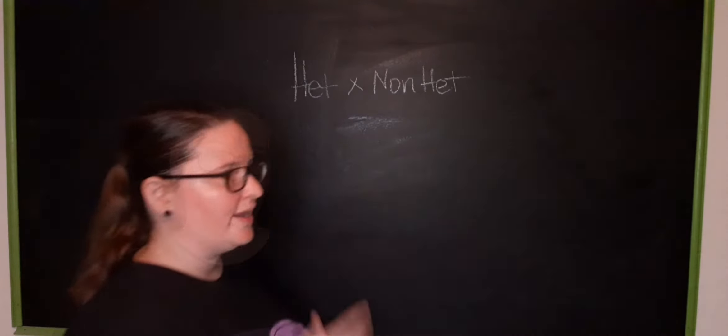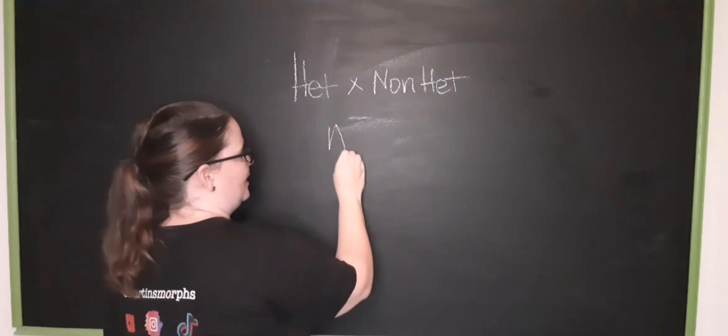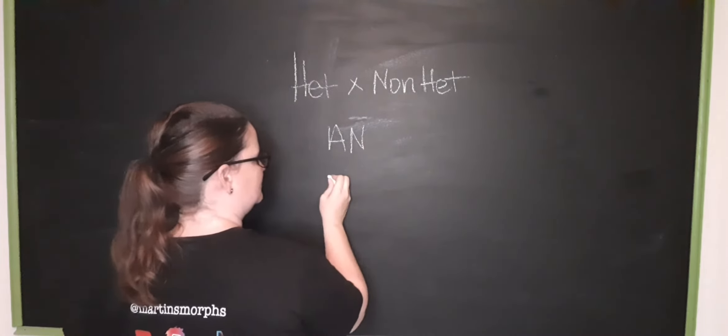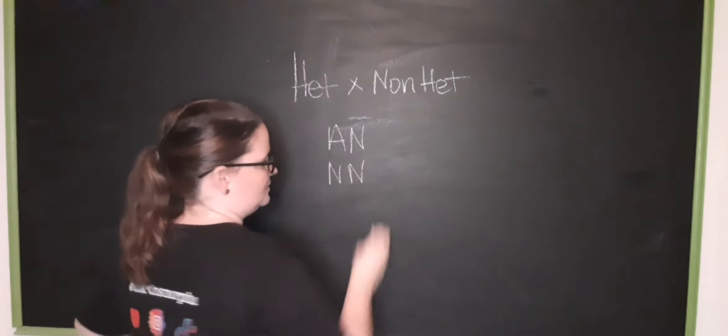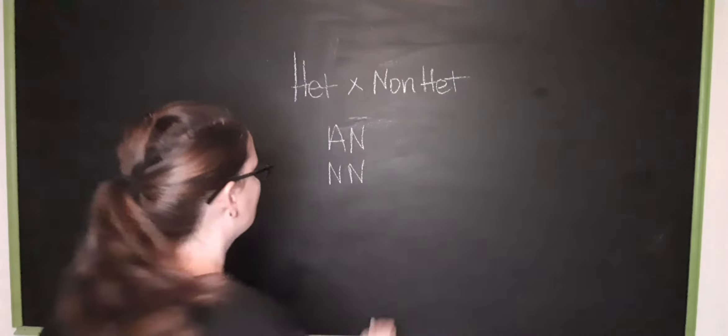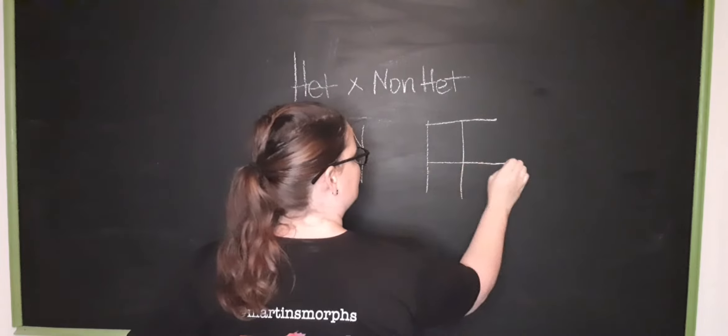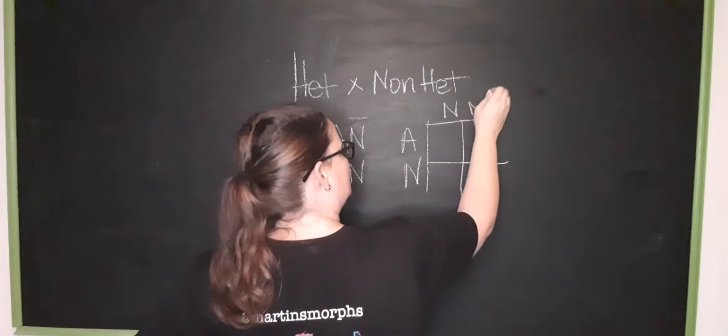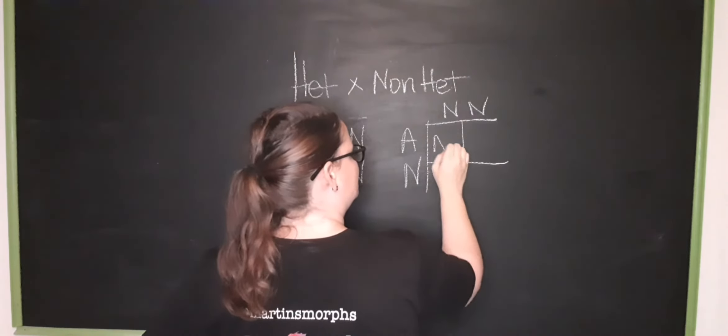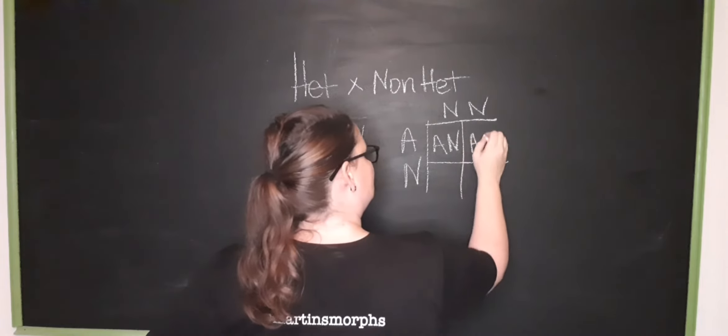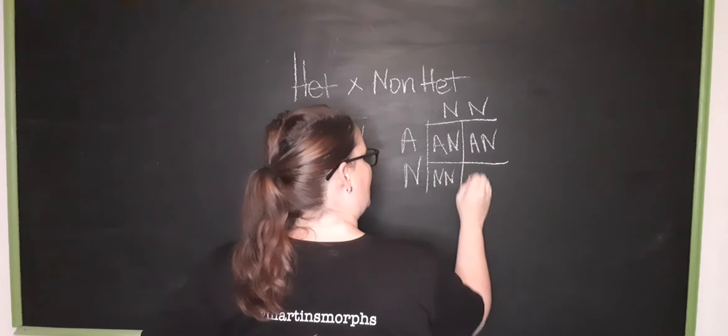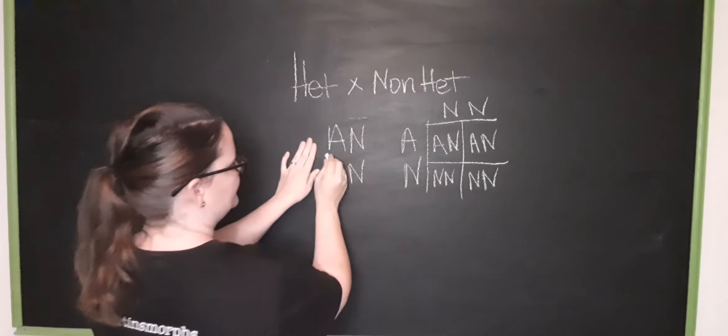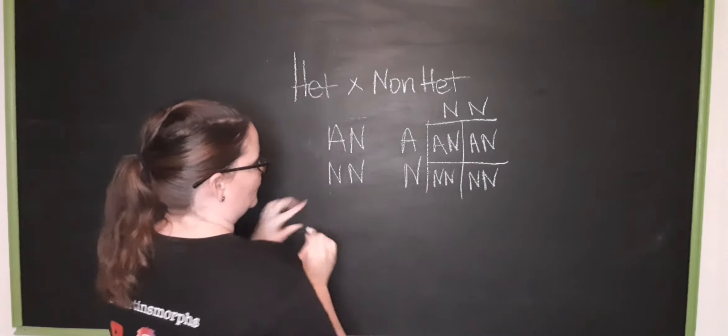Now the question is how do we get 50 percent? Where does that terminology come from? So we're going to do a het versus non het now. Using albino again. This is the het, and this is the non het. Running the Punnett square, we're going to do normal. And that is the het. This is albino, this is normal, this is normal, and this is normal. This is the non het.